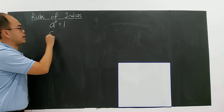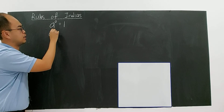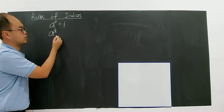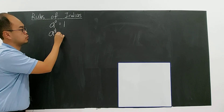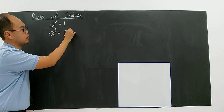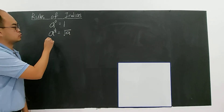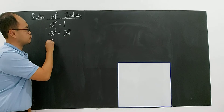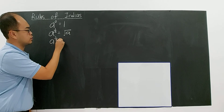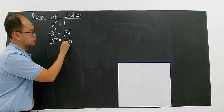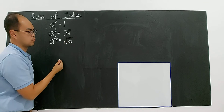If you have A to the power of 1 over 2, you will get the square root of A. And if you have A to the power of 1 over 3, you will get the cube root of A — we just write a small 3 here.